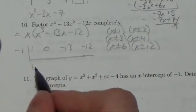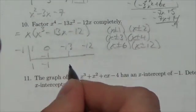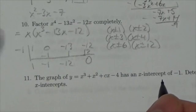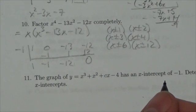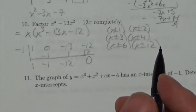So bring down the 1, multiply, and add. Multiply, add, multiply, add. And I get 0 as a remainder, which is what I was expecting here. Because I knew when I plugged that in that x + 1 was going to be a factor here.